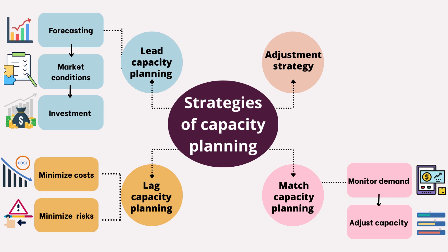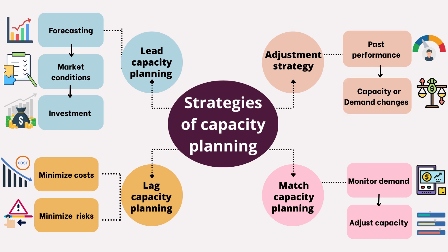The adjustment strategy is a strategy for gradual changes to capacity or demand based on the organization's past performance. For example, if you notice that you come close to or exceed your capacity during your busiest months, you will adjust by increasing your capacity in preparation.